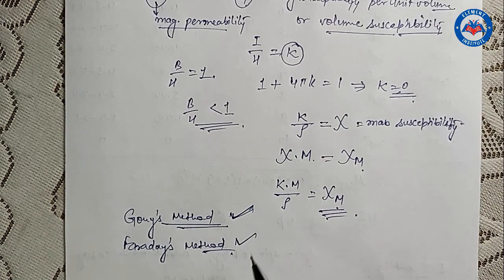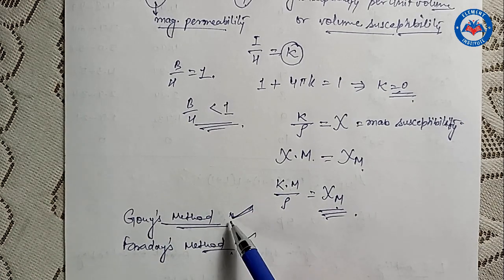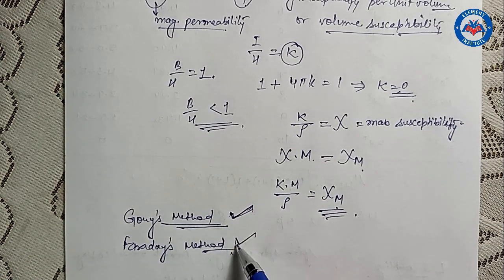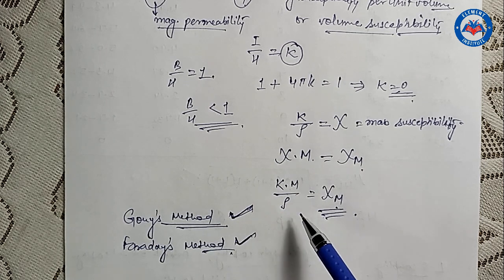There are numerous methods for the measurement of magnetic susceptibility. However, the two most important methods are the Gouy method and the Faraday method. In my next video I will discuss both these methods in detail. Thank you and have a nice day.